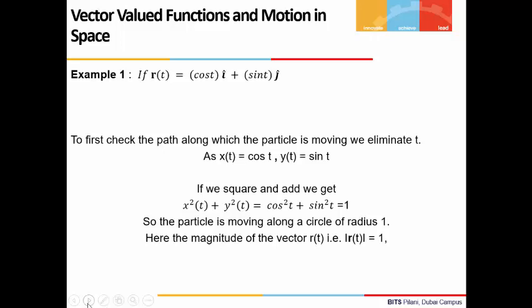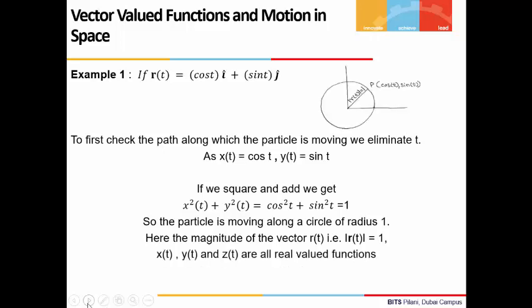How did we get the radius here? The magnitude of the vector r(t) is 1. We can see this in the figure. The coordinates of the point P are x(t), y(t), which means cos(t), sin(t).